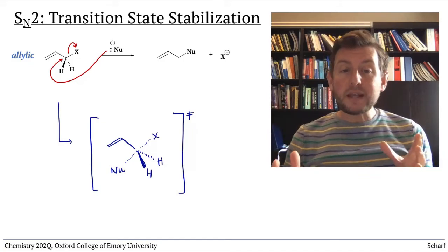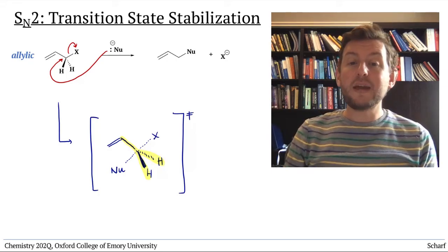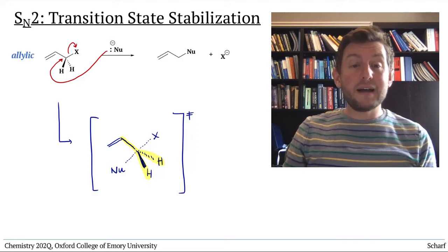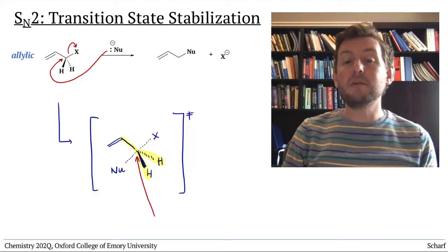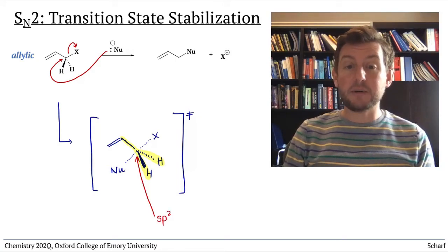At this point, these three groups are arranged in a trigonal planar geometry, which implies that here in the transition state, this central carbon is sp2 hybridized.